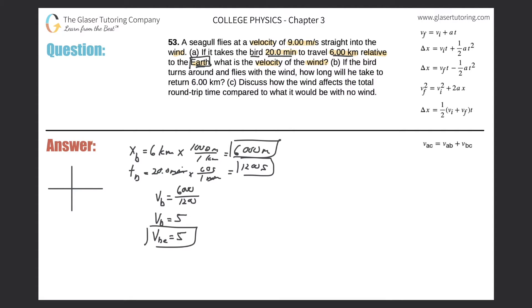Going back to the problem: a seagull flies with a velocity of 9 meters per second — but relative to what? It definitely cannot be relative to the earth because we just calculated that should be 5 m/s. So this 9 m/s must be the only other variable in the problem — the wind. This has to be the velocity of the bird relative to the wind. Let's draw that on our coordinate plane: the velocity of the bird relative to the wind equals 9 m/s.